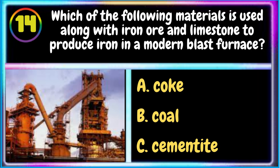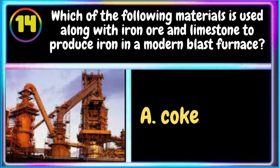14. Which of the following materials is used along with iron ore and limestone to produce iron in a modern blast furnace? A. Coke B. Coal C. Cementite. The correct answer is A. Coke.